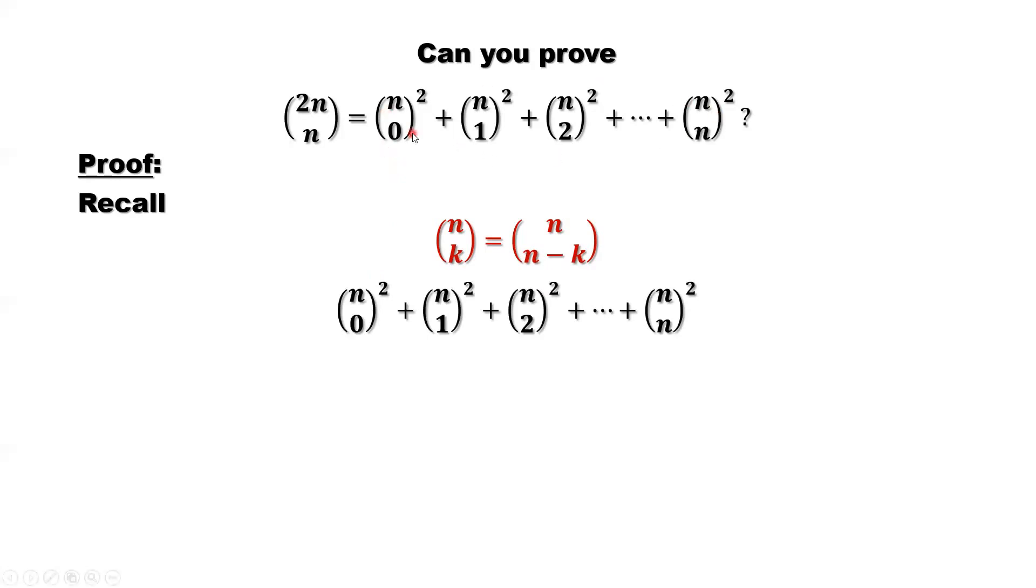From the right-hand side of this identity, we can rewrite the right-hand side as the following. Originally that's square, we keep one here. The second one we change it to n choose n minus k. So here, n choose 0, here should be n choose n. N choose 1, here n choose n minus 1, and so on, until the last one, n choose n, n choose 0. This is identical to the right-hand side.